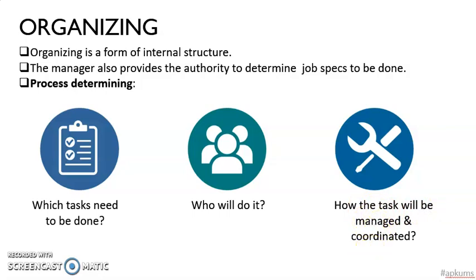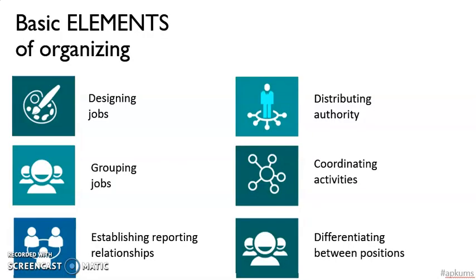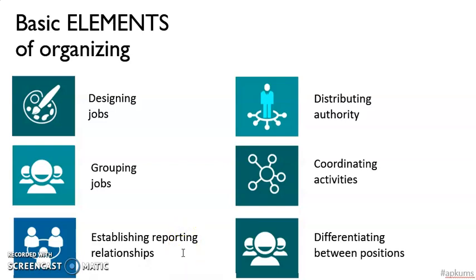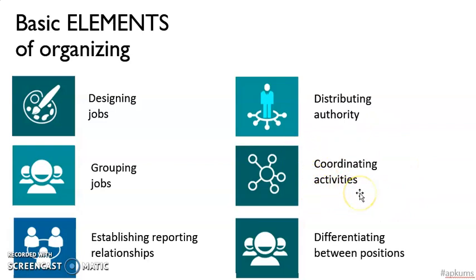In organizing, there are many jobs that the manager has to do. First, the manager has to design the jobs — they have to determine what type of tasks the workers have to do. The manager might also determine to group jobs together to build a team to work together. Next, they have to determine the reporting relationship; for example, a worker will report to the supervisor and the supervisor will report to the manager. At the same time, the manager has to determine authority — who manages whom. The manager will have authority to manage supervisors, and supervisors will have authority to manage workers. The manager also has to coordinate work activities, making sure no two persons are doing the same job and wasting their time.